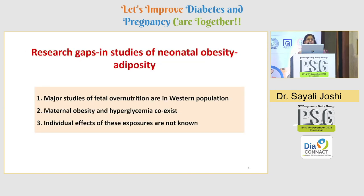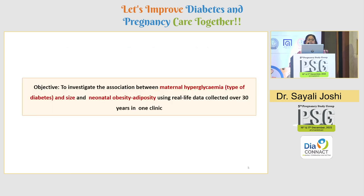The majority of studies examining fetal overnutrition are conducted among western populations, which are characterized by the co-existence of maternal obesity and hyperglycemia. Therefore, it is very difficult to separate out the influence of these two exposures on outcomes. We planned this study with the objective to investigate the association between maternal hyperglycemia and neonatal obesity and adiposity using real-life data collected over 30 years in one clinic.